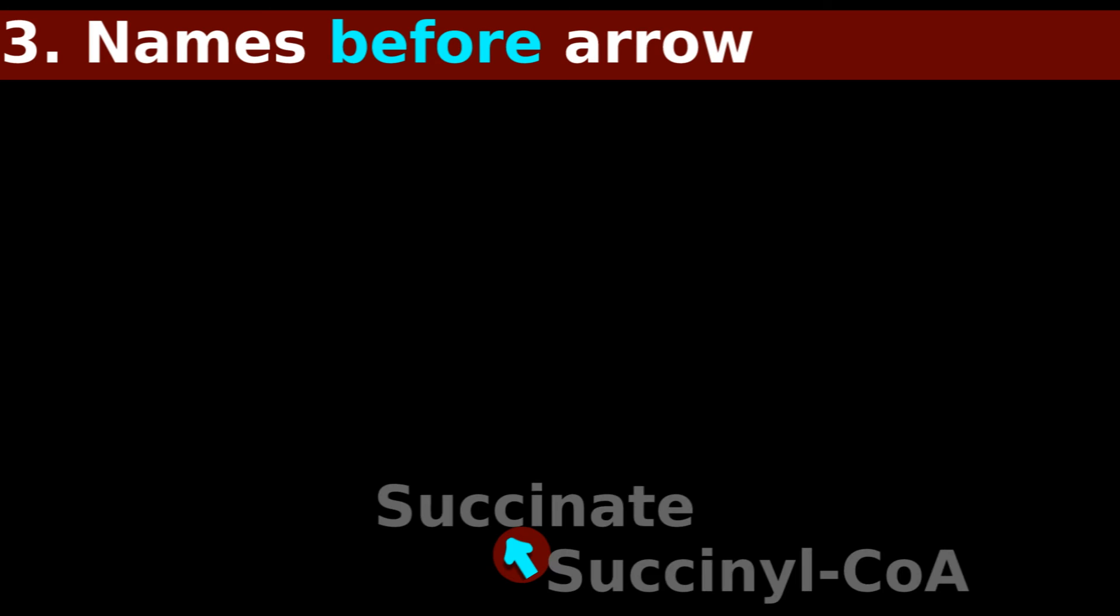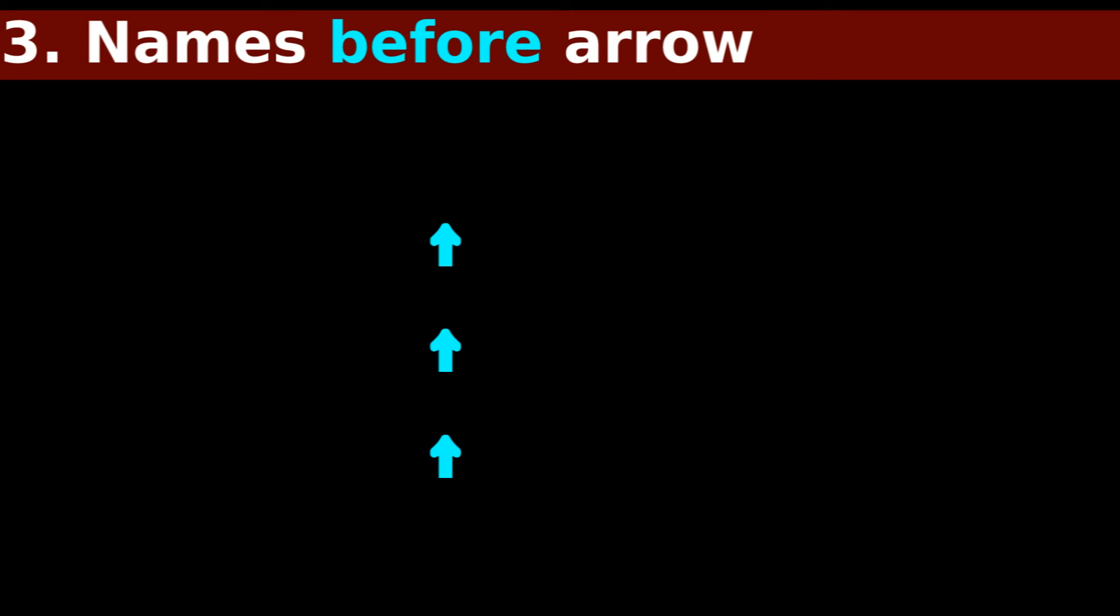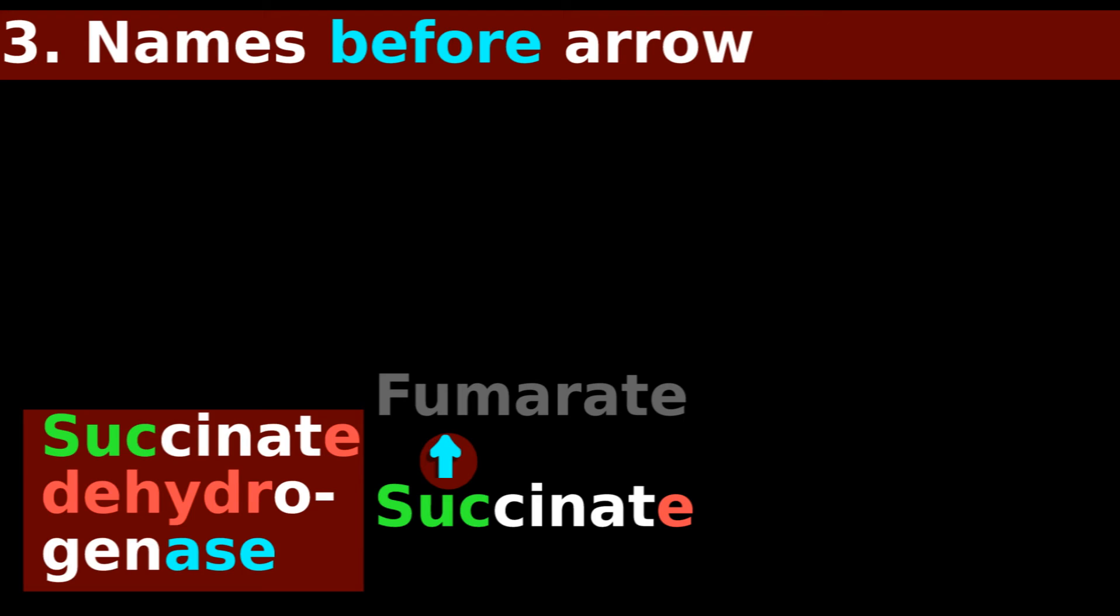What enzyme does this step? Before the arrow is succinyl-CoA. So the enzyme should be succinyl-CoA synthetase. This continues for more enzymes. Suc-E, few, more.